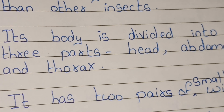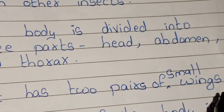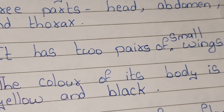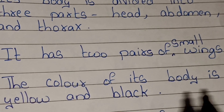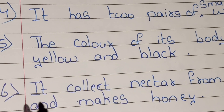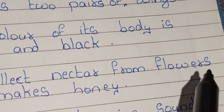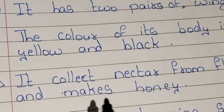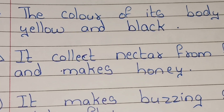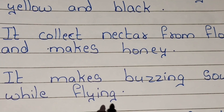It has two pairs of small wings. The color of its body is yellow and black. It collects nectar from flowers and makes honey. It makes a buzzing sound while flying.